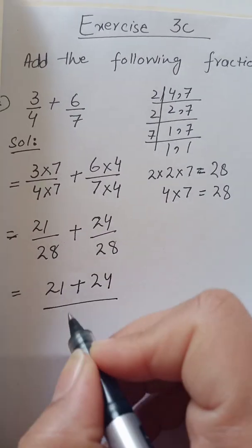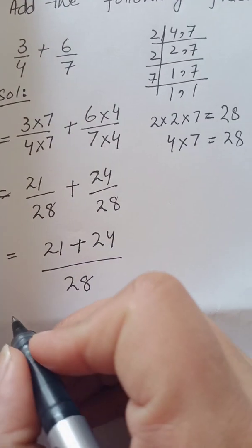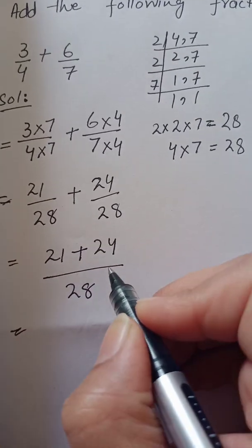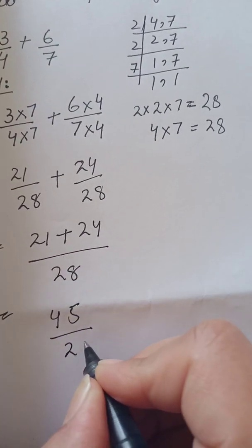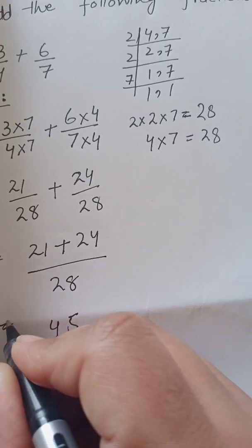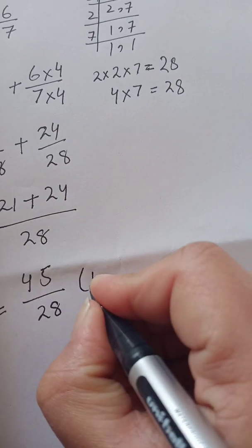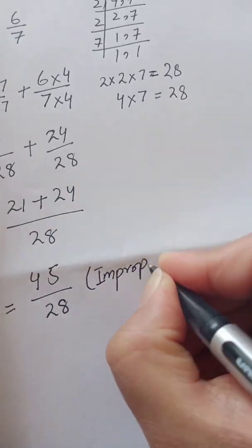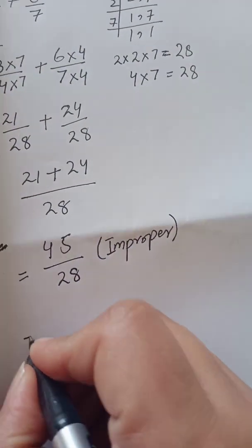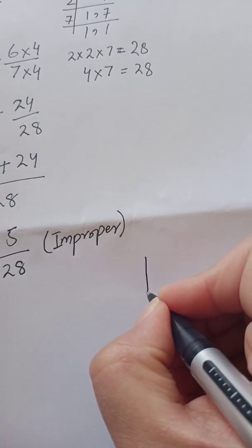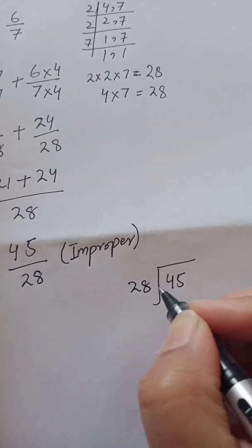Ab numerators ko add karenge: twenty-one plus twenty-four likhenge, aur denominator twenty-eight ek baar hi likhte hain — us mein koi change nahi aayega. Twenty-one plus twenty-four: four plus one = five, two plus two = four — so forty-five upon twenty-eight. Yeh improper fraction hai. Ab answer improper mein nahi denge — isko mix mein change karna hoga.